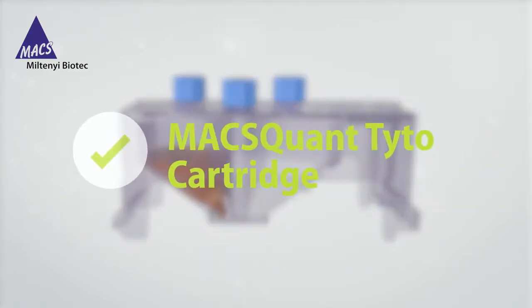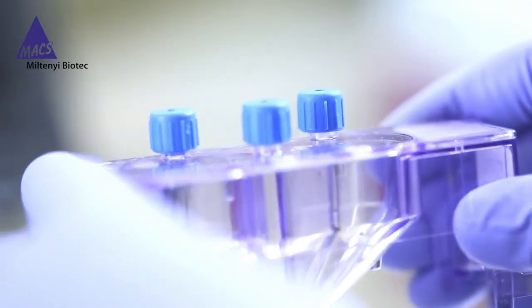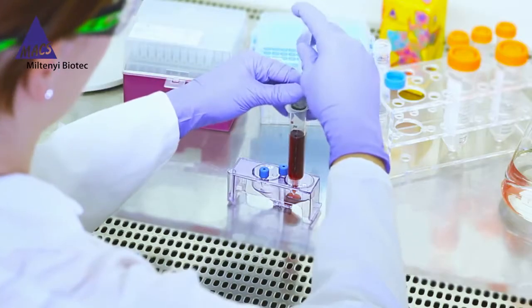Sorting happens exclusively in the cartridge. There are no fluidics within the instrument itself. All three chambers can be accessed from above through luer lock ports, which allow for easy loading of the sample.